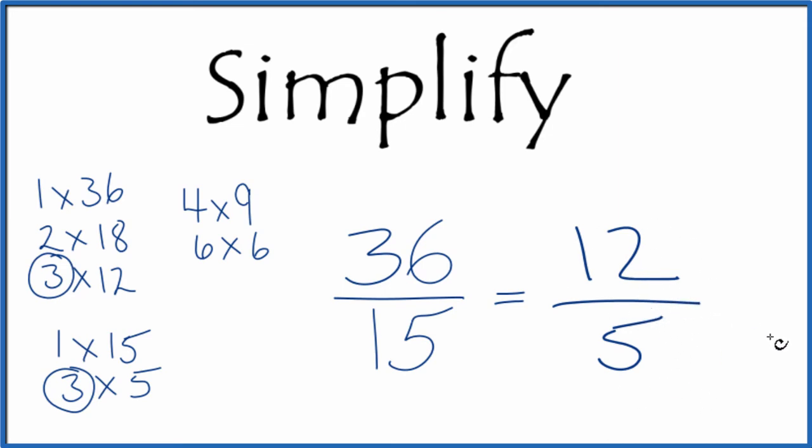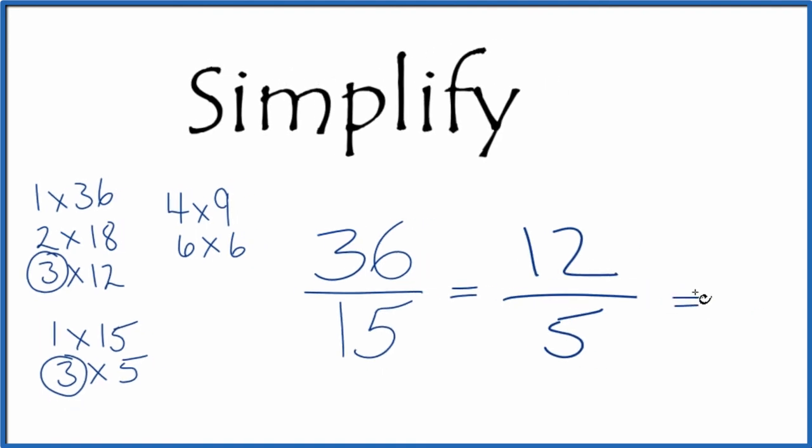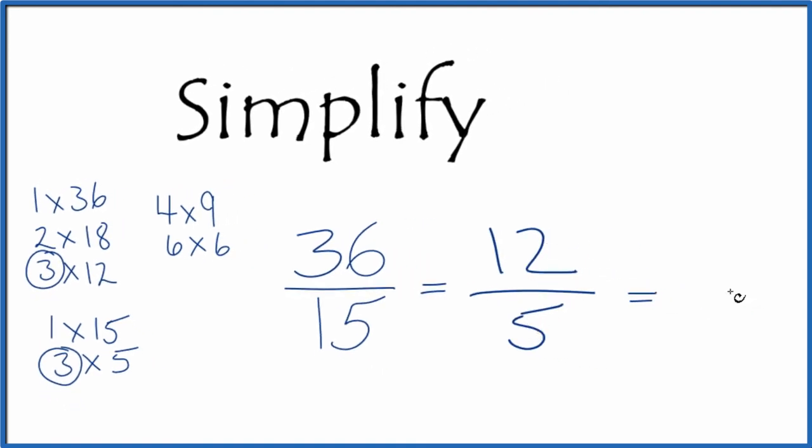This is an improper fraction. We could write it as a mixed fraction. We could say 5 goes into 12 two times, so we'd have 2 and 2 fifths.